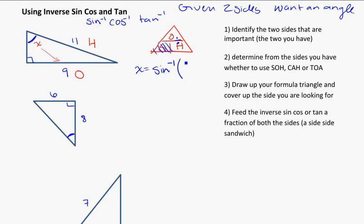An inverse of o over h, so that's going to be 9 divided by 11. If we plug that into our calculator, you get 54.9 degrees. The reason we're feeding it a side-side sandwich here, we're feeding it two sides as a fraction, is that it needs to compute with those sides to give the ratio to find out what the angle is. So again, here we're looking for an angle, so we're going to use the inverse functions.